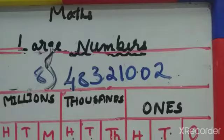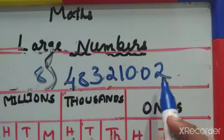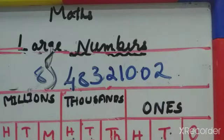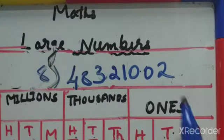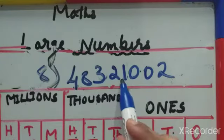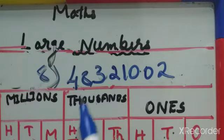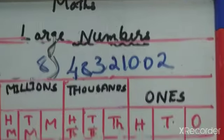8th question. The number is 483,210,002 — a large number. We have to write it in the international place value chart. After placing commas every 3 digits from the right: 1, 2, 3 — comma — then 3 more — comma.